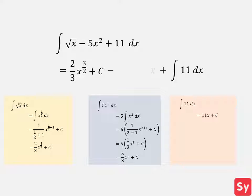Now we'll replace the integrals with their antiderivatives. We can simplify this to 2 thirds times x to the 3 halves minus 5 thirds times x cubed plus 11x plus c.